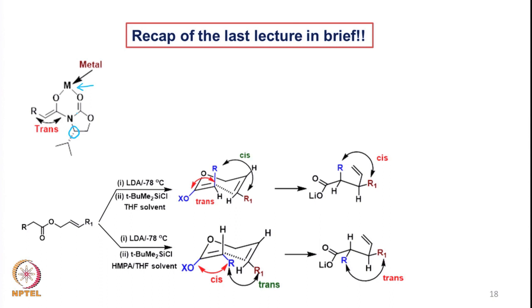During that process, we also looked at how the dipoles of this enol part and the oxygen-carbon part of the auxiliary repel each other when the aldehyde forms the chelation with the boron. Therefore, the orientation goes back, and that allows the specific orientation of the aldehyde where the R group is equatorially oriented, followed by the attack of the enolate from the C-face, leading to the product — which is the syn-aldol.